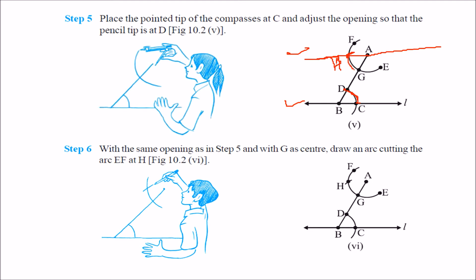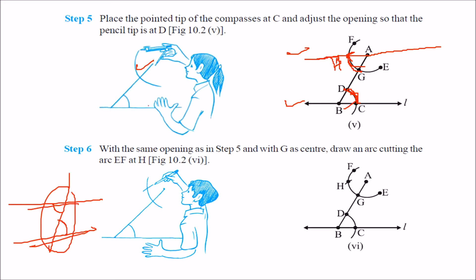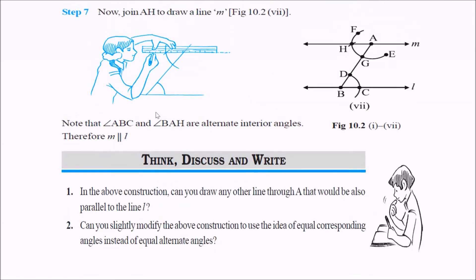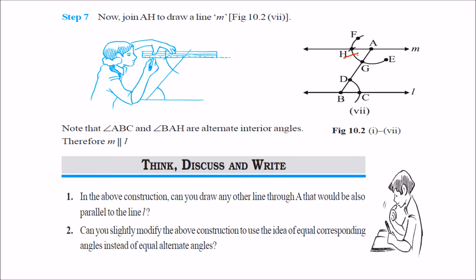Because this angle and that angle — you have made them equal by this construction. When the interior opposite angles formed by a transversal cutting two lines are equal, by the property of parallel lines and transversal, these two angles are equal and these two lines become parallel. This is how we make parallel lines — there are two ways you can make them.